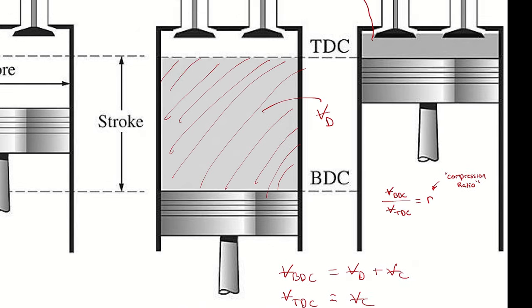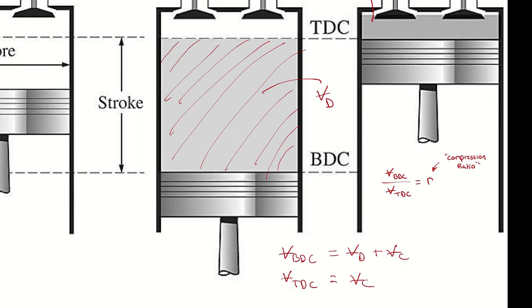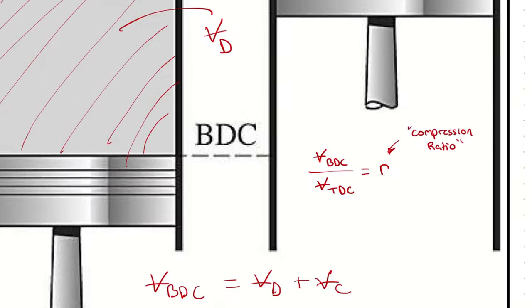If the total volume at bottom dead center, VBDC, is 8 times larger than the total volume when the piston is at top dead center, that would be a compression ratio of 8, also sometimes described as 8 to 1.